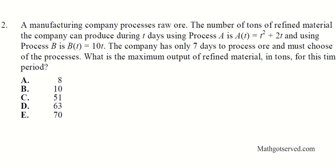Now let's take a look at number 2. It says a manufacturing company processes raw oil. The number of tons of refined material the company can produce during t days using process A is A(t) = t² + 2t, and using process B is B(t) = 10t. The company has only 7 days to process and must choose one of these processes. What is the maximum output of refined material in tons for this time period? We have two processes represented by two different functions, and the question is which produces the maximum output.